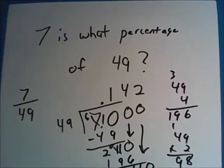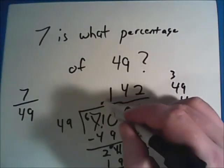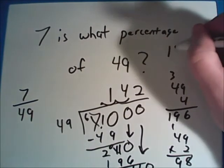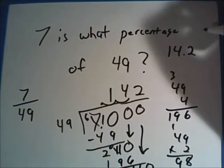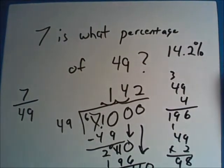We can stop here because we just need three numbers to the right of that decimal point. Because when we move our decimal point over two places, we get 14.2. So 7 is 14.2% of 49.